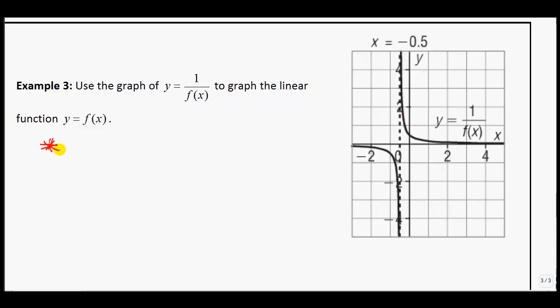So I'll make a little note. The vertical asymptote is at x equals negative 0.5. So we see it's going through that point. They even tell you right there. So therefore, what can we say?